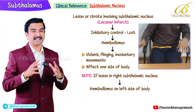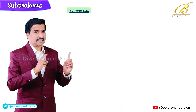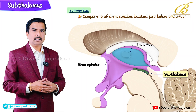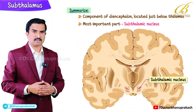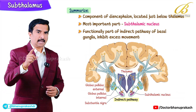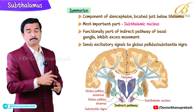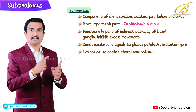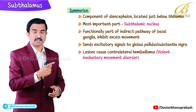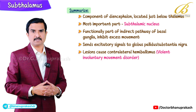To quickly summarize: the subthalamus is a component of the diencephalon located just below the thalamus. Its most important part is the subthalamic nucleus. Functionally, it is part of the indirect pathway of the basal ganglia, helping to inhibit excessive movement. It sends excitatory signals to the globus pallidus and substantia nigra. Lesions in the subthalamic nucleus can cause contralateral hemiballismus — a violent involuntary movement disorder.